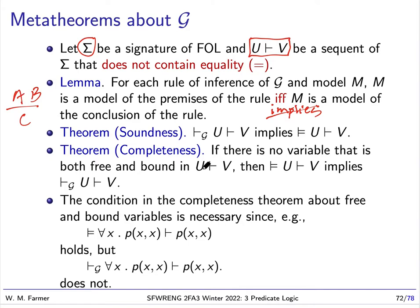And we have completeness, which says that if the sequent is valid, then there will be a proof of it.